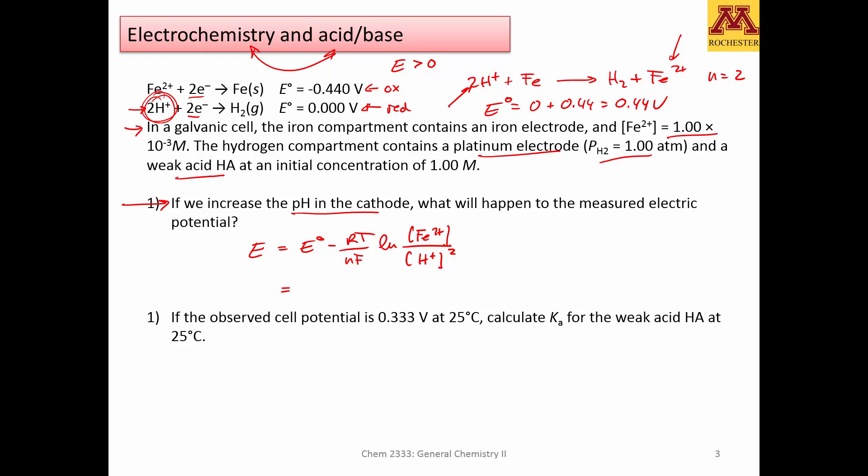Now, let's see, so the standard cell potential is a positive 0.44, negative 8.31, let's say that we are at 25 Celsius, 2 times F, F is 96,485, logarithm, 10 to the negative 3, and in here, they don't tell me the pH, but of course if your pH increases, it means that the concentration of hydronium will decrease.